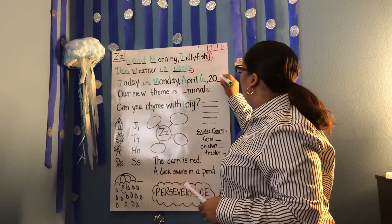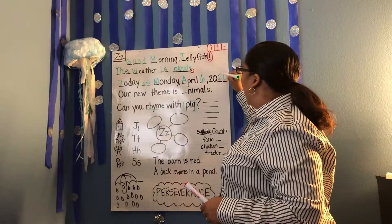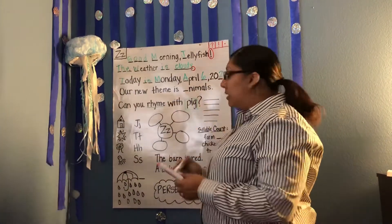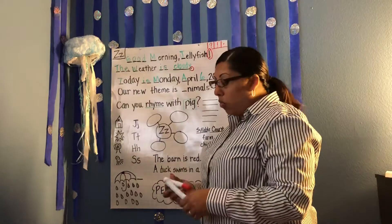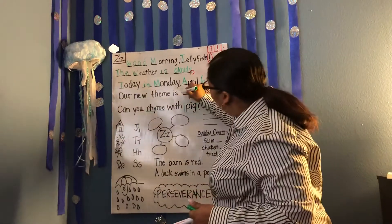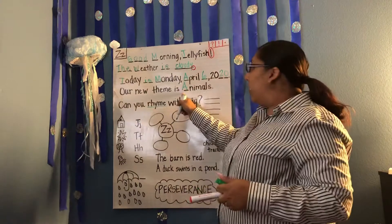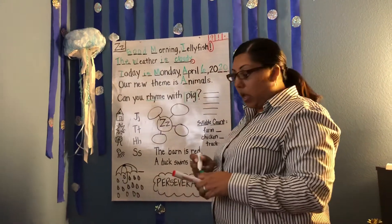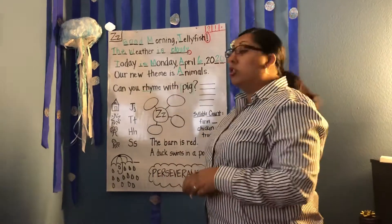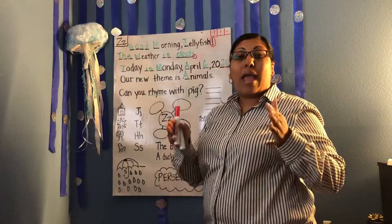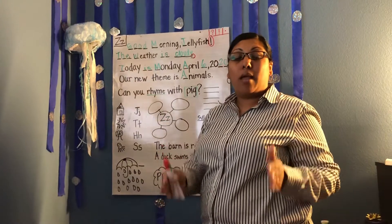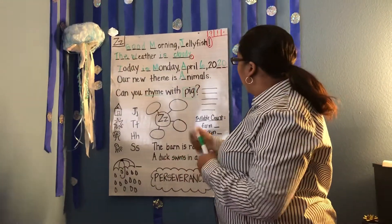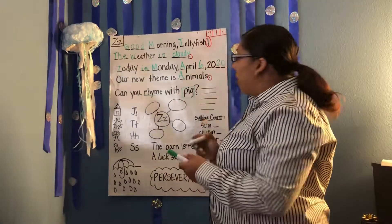Our new theme is animals, class. What is it going to be on? Animals. And what letter is this, class? That's correct — the letter A. This letter A makes the short A sound: A. Animal. Say it with me: A. Animals. Now, we also have our ending for our sentence right here — it's a period.